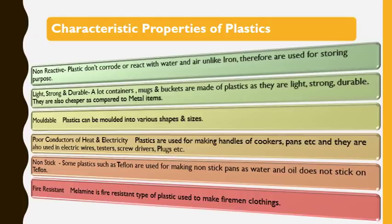Some plastics are poor conductors of heat and electricity, so they can be used for making handles of cookers or frying pans, and can be used in screwdrivers or testers. Some plastics are also used as non-stick coating — the Teflon coating used on many non-stick utensils is basically made of plastics. Plastics can also be fire resistant, like melamine, which is used for making firemen's clothing.